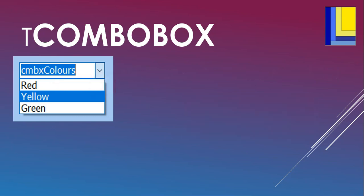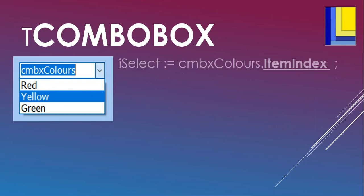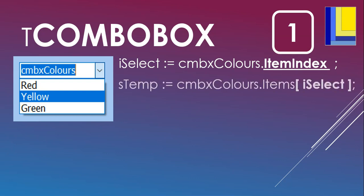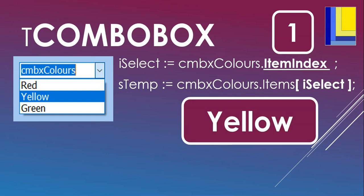If you want to get the item that is currently selected, use ItemIndex. Store it in a variable — that tells you the number of the selected item. For example, if yellow is selected, ItemIndex is 1 (red is 0, yellow is 1). Then fetch the value at that position using combobox.items[posCell], which returns 'yellow' into sTemp. That's how you find out what is selected.